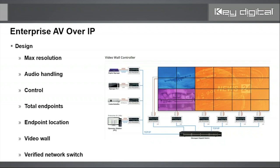You need to think through control — from the free Key Digital app, by a professional control system like Compass Control that's built into many of these products, or by third party. We use the exact same matrix switching command with these products as all our matrix switchers have used for over a decade, so third-party drivers already exist. Also consider how many total endpoints and their location — encoders and decoders.